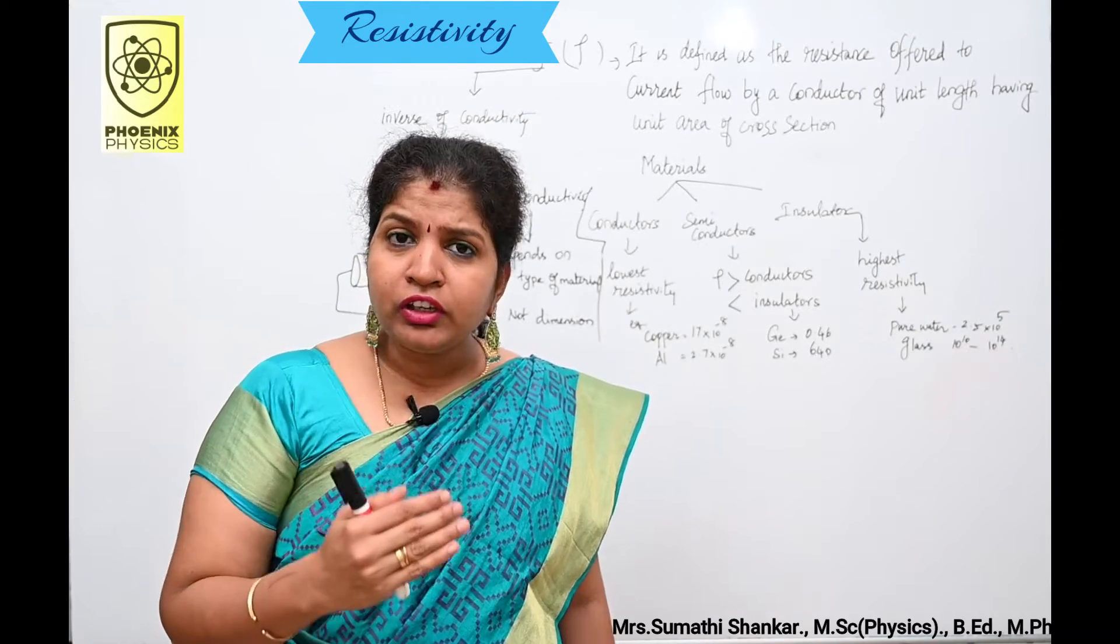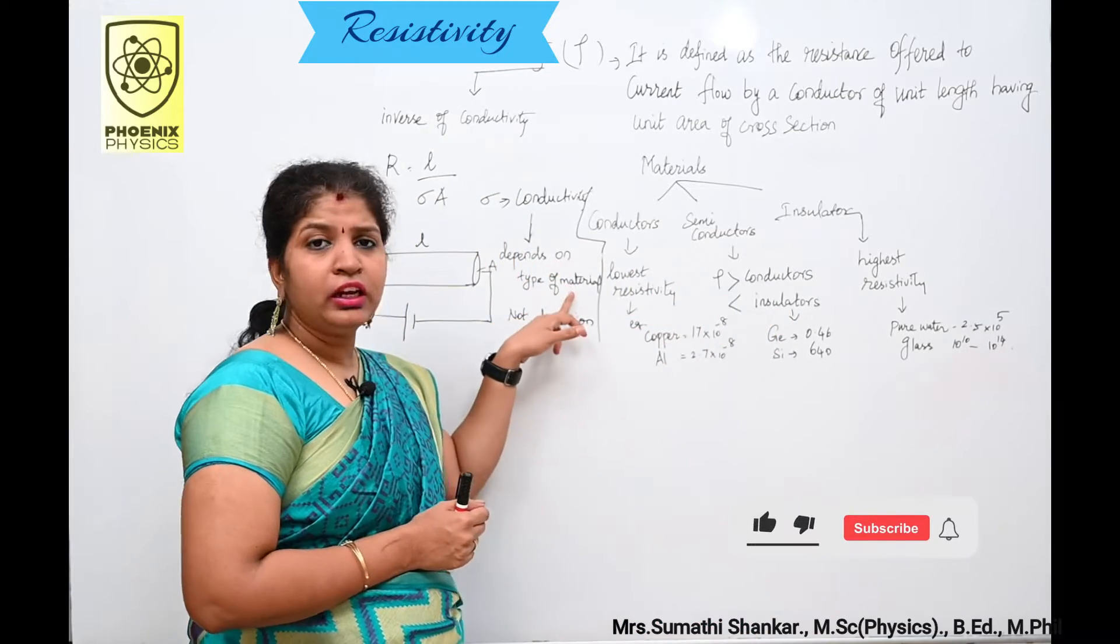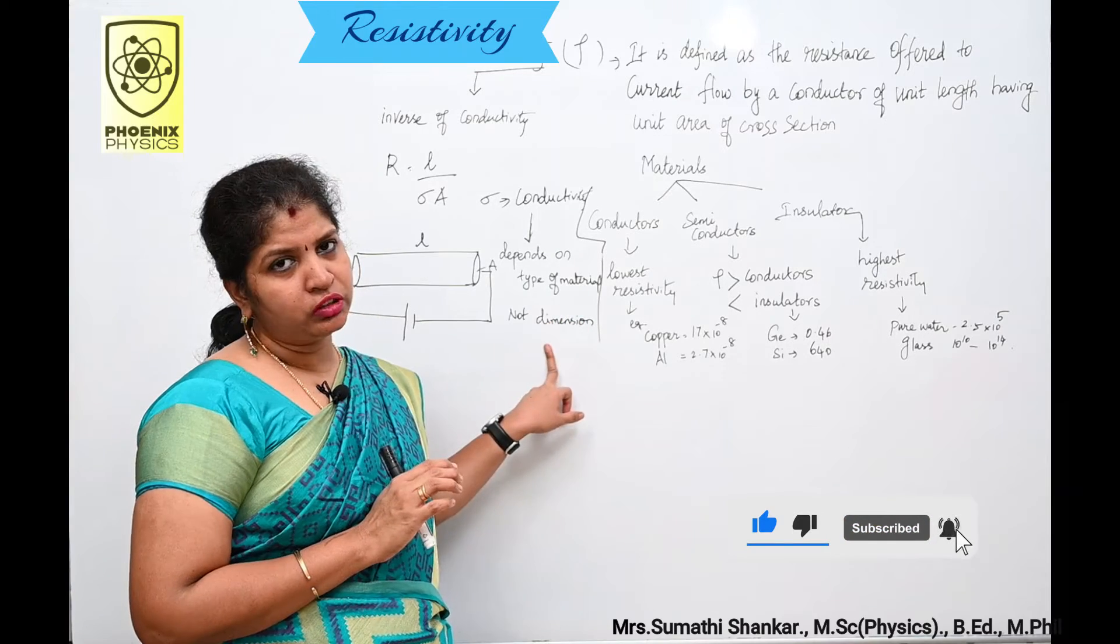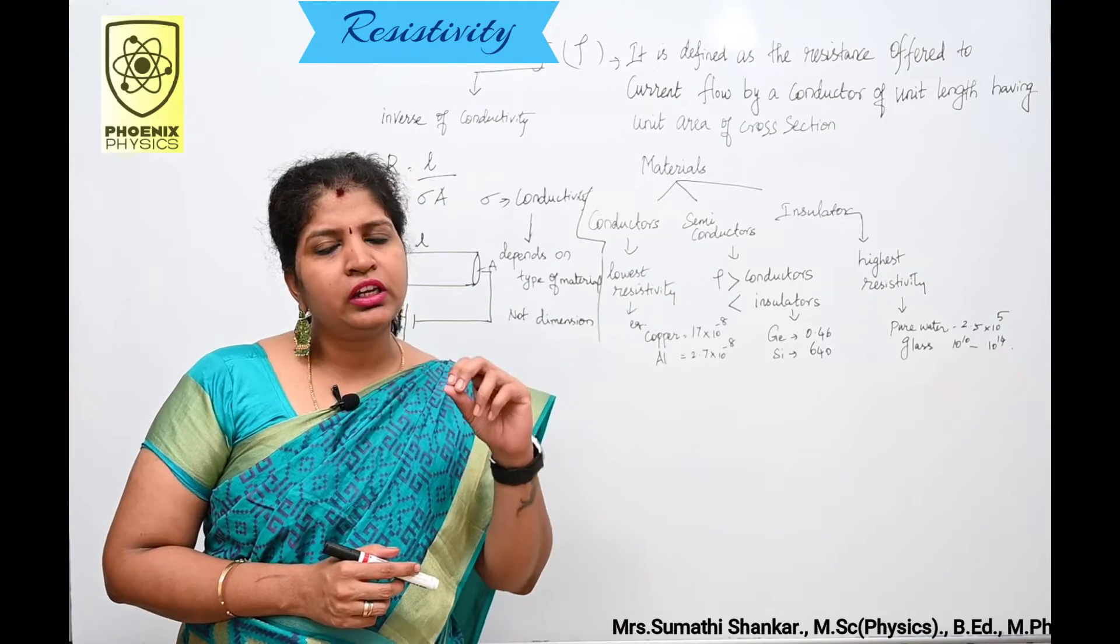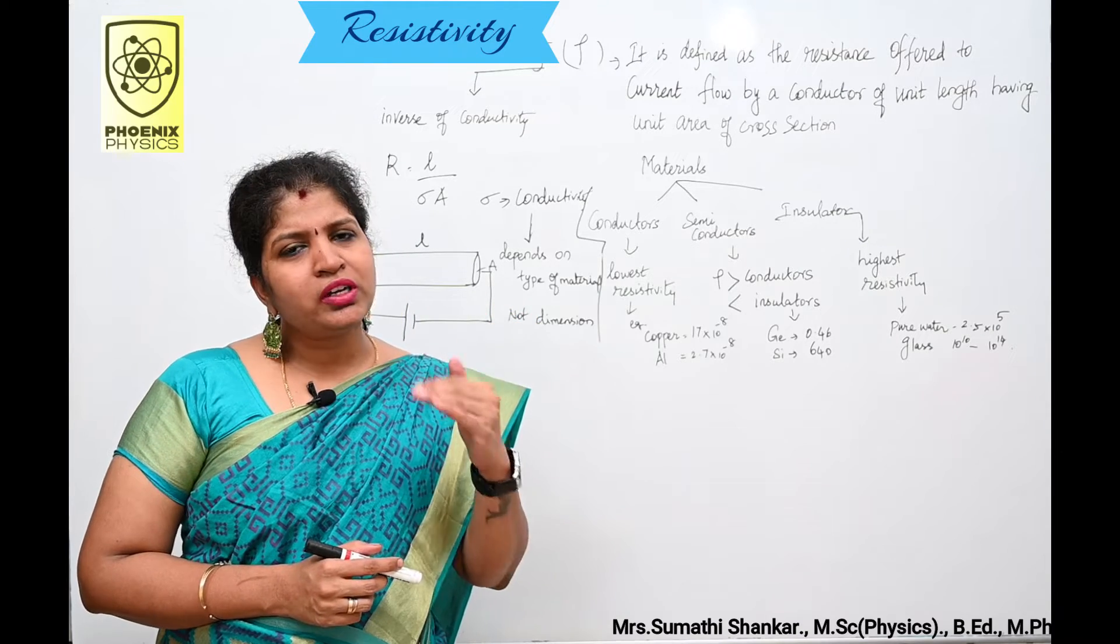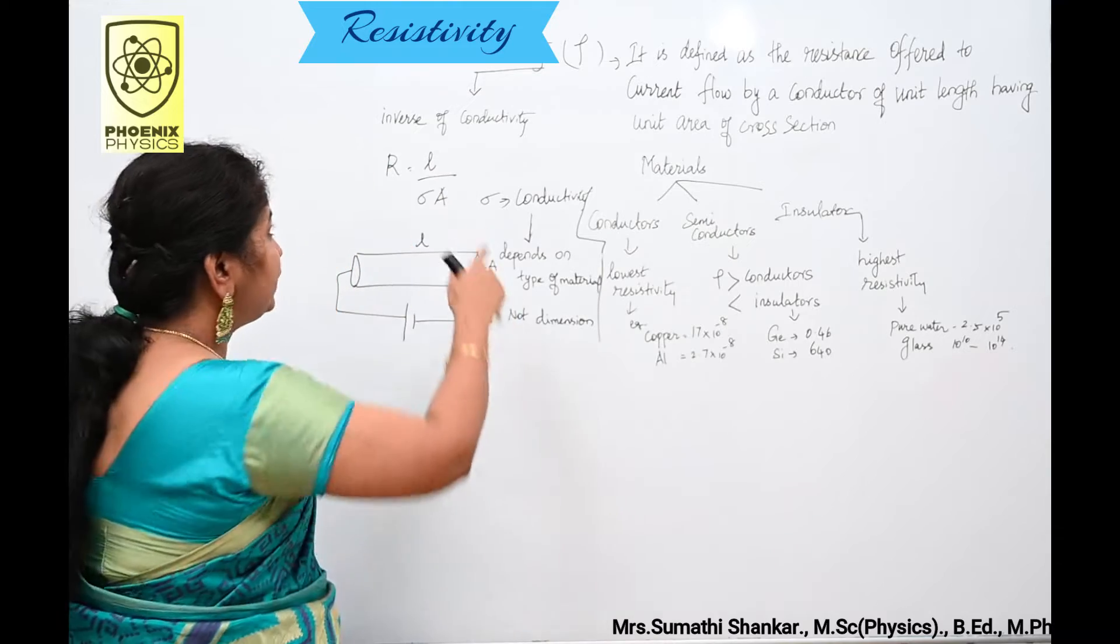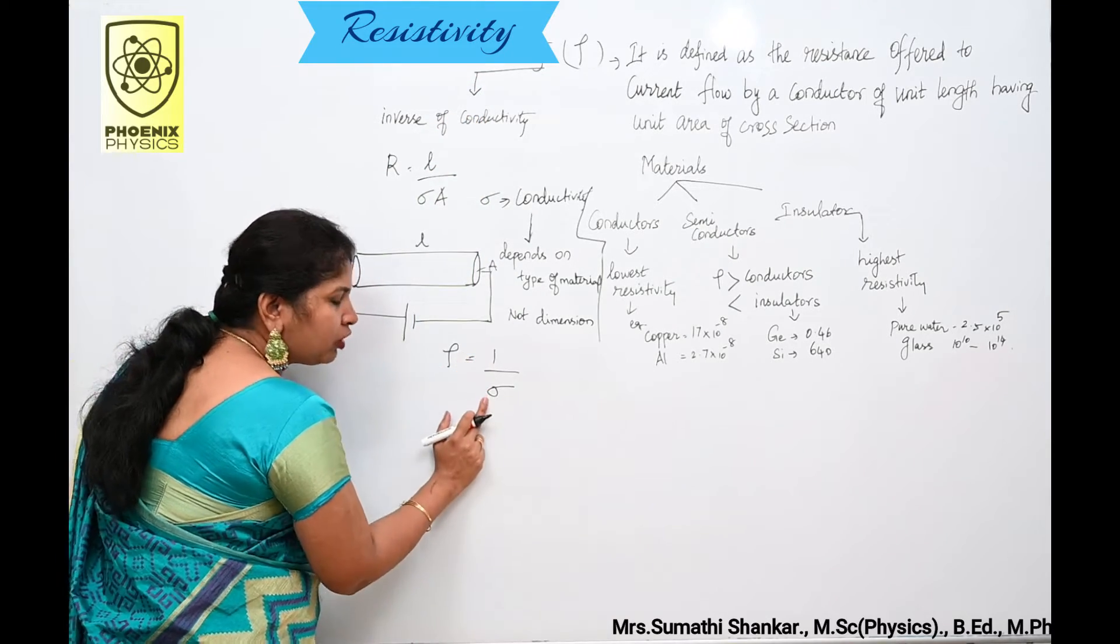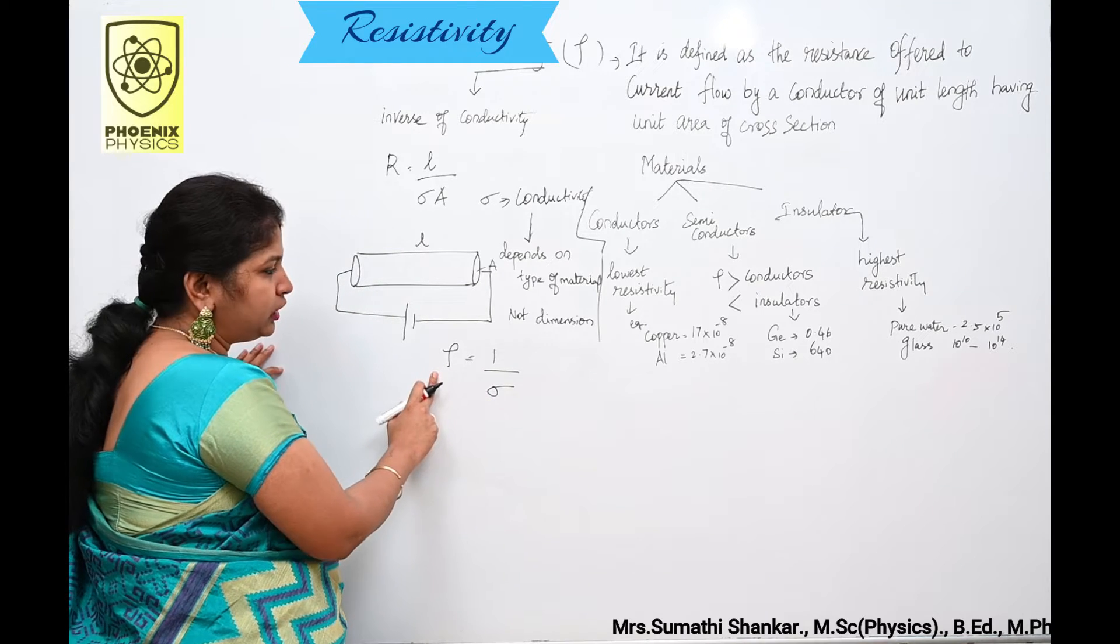This conductivity of the material depends only on its type of the material used but not on its dimension. This is very important. We have already studied resistivity in microscopic form of Ohm's law derivation part. What is resistivity? Simply we can say inverse of conductivity is known as resistivity. Or we can say the reciprocal of conductivity is equal to the resistivity of the material.